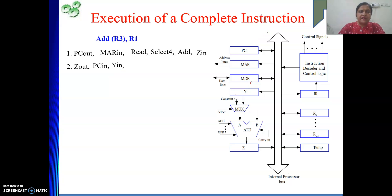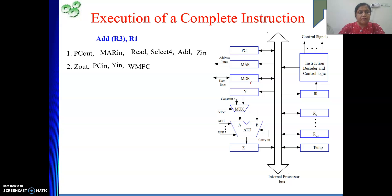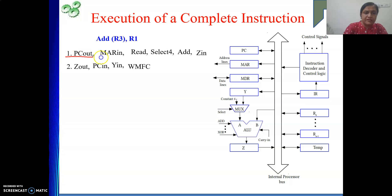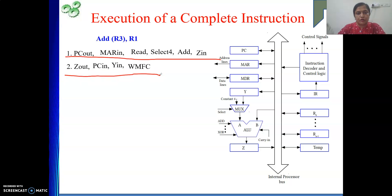PC is now incremented and the read signal has already been given to memory, so we cannot do anything more before the instruction arrives. So now: WMFC — we are waiting for the MFC signal from memory. The first set of operations (PC out, MAR in, read) were done in one clock cycle. The WMFC step may not be one clock cycle — it depends on when memory gives back the MFC signal.